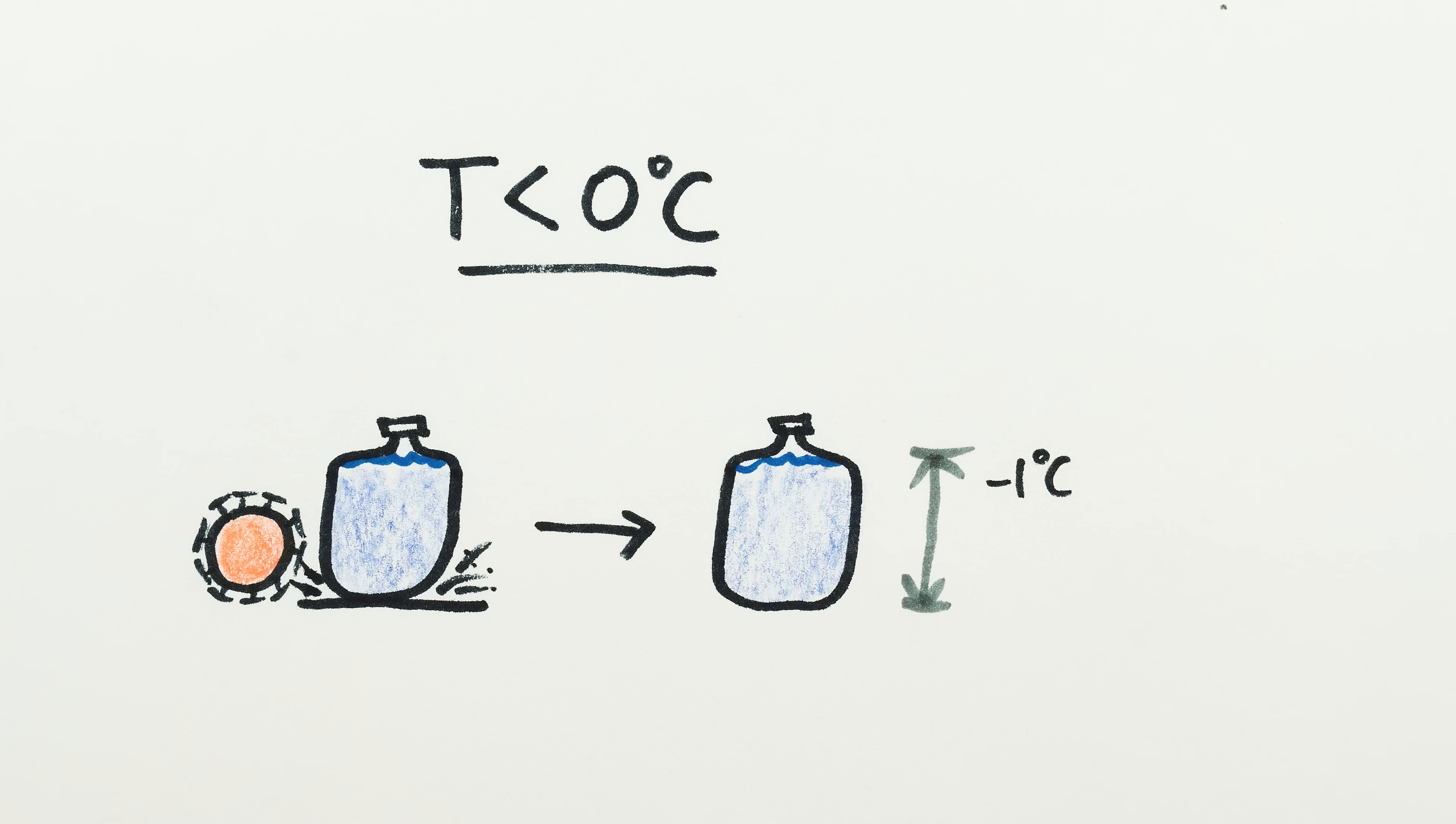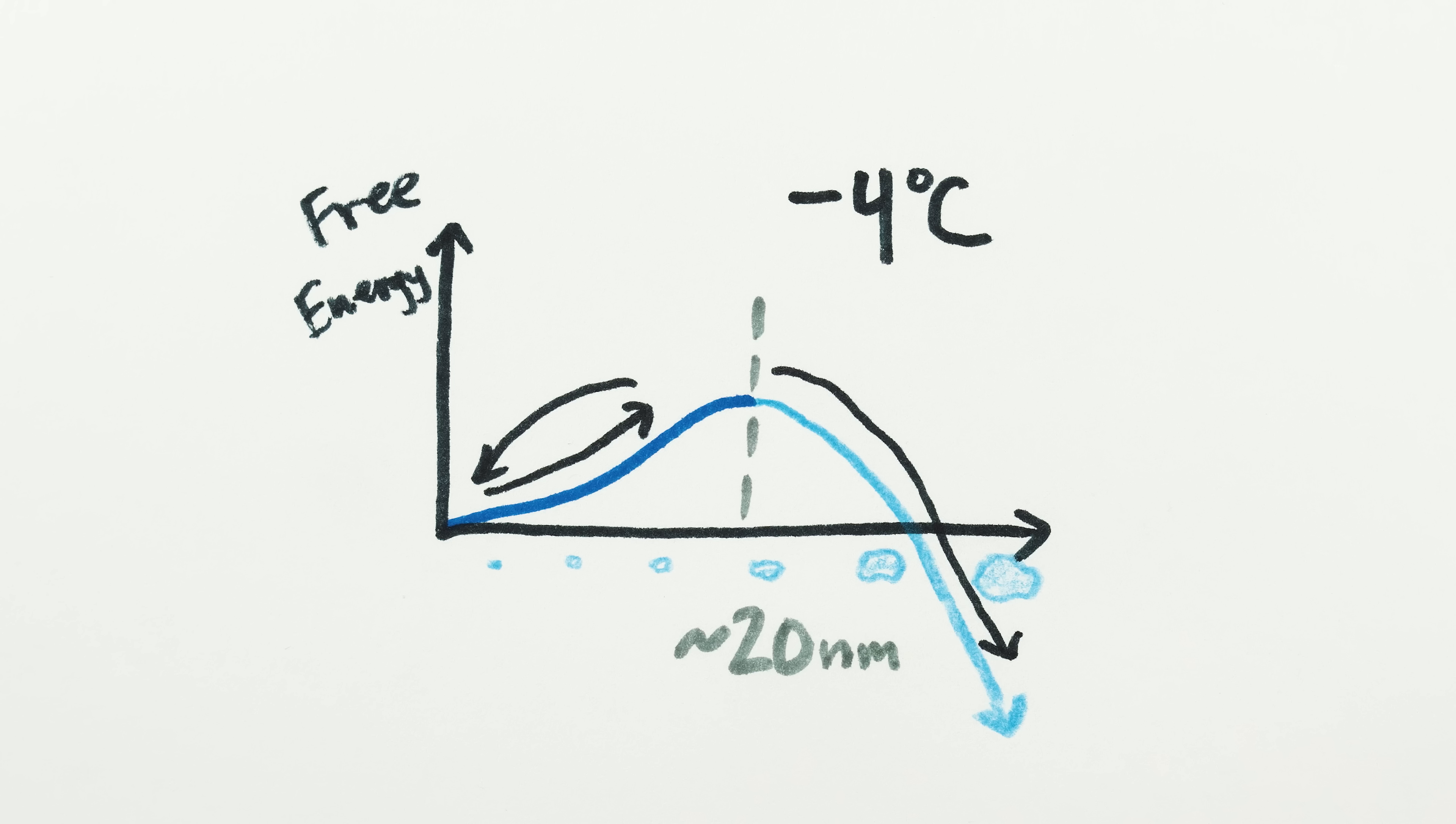For water one degree celsius below zero, the bottle needs to be less than 200 nanometers long. For water four degrees below zero, the bottle needs to be even smaller, around 50 nanometers. Which maybe isn't surprising, since for water four degrees below zero, the tipping point would normally be a crystal around 20 nanometers in size, which would be a pretty big proportion of the container.